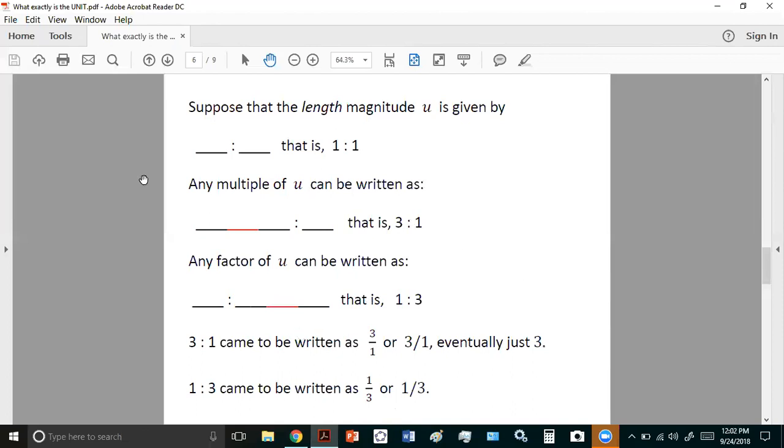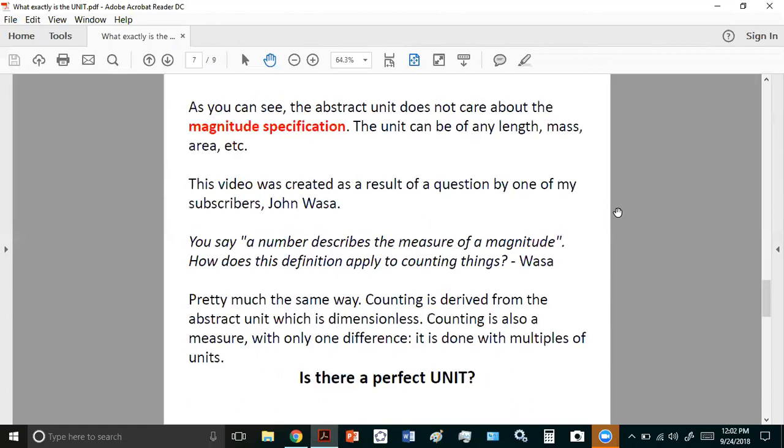So we derive all numbers simply by the chosen unit, whether it's a multiple or a factor. As you can see, the abstract unit does not care about the magnitude specification. The unit can be of any length, mass, area, etc.